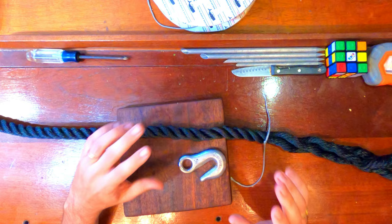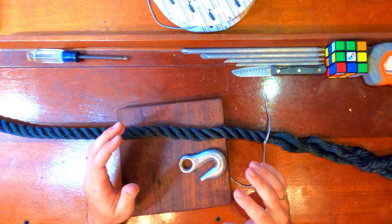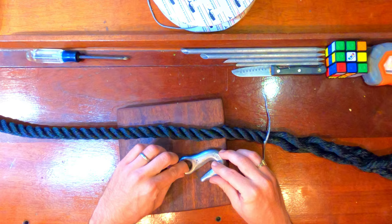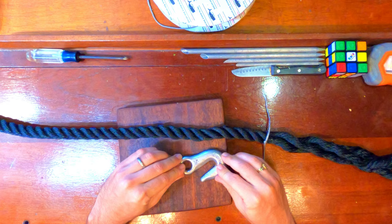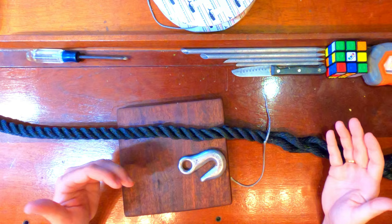It's a very strong splice that's very simple and holds very well. You have to keep an eye on it for chafe because this smooth area in here over time can chafe, and when it gets chafed you have to replace the splice. But in the meantime it's a very secure way to attach the chain hook to the snubber to give you the needed elasticity in an all-chain rode.